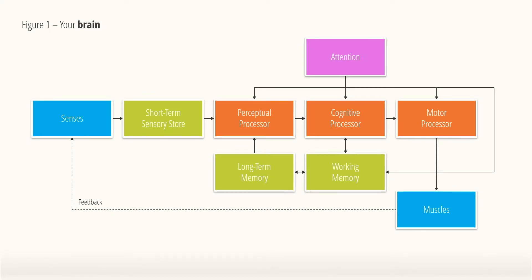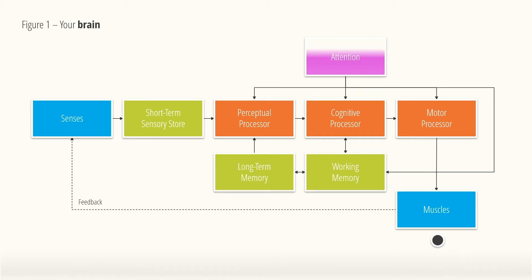Take this human information processing diagram from Card, Moran, and Newell from 1983. While it's not meant to reflect the actual anatomy of the human brain, it is used as an abstraction of how it functions. A simplified explanation would be that information comes in through our senses and gets stored in short-term memory. Then it is processed through a variety of processors that interact with our working memory and long-term memory, draining our attention, and resulting in a physical response to our muscles, which feeds back into our senses. If we can understand the inner workings of these processes, we can optimize how information travels through them. That's why cognitivism is sometimes referred to as the information processor view on learning.